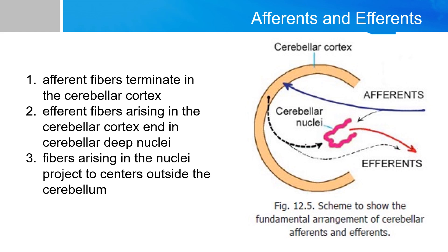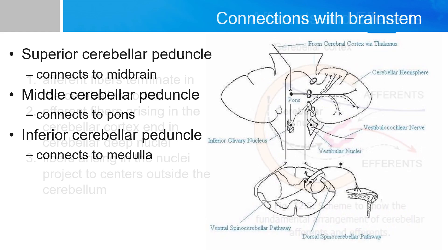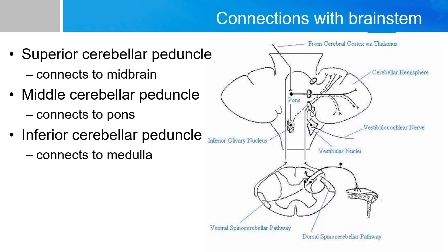Many of those exceptions involve the vestibular system. All inputs and outputs to and from the cerebellum must pass through one of three structures: the superior cerebellar peduncle, the middle cerebellar peduncle, and the inferior cerebellar peduncle.